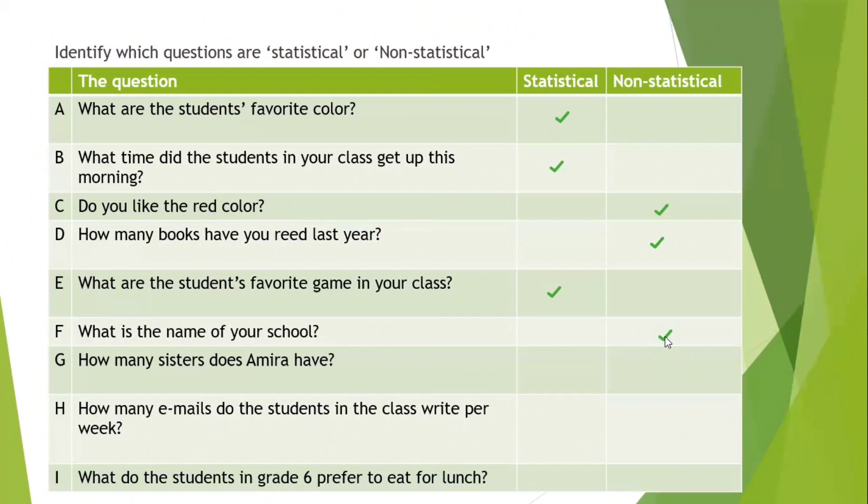G, how many sisters does Amira have? So I'll go and ask Amira, how many sisters do you have? She will say one, two, three. So this is non-statistical. H, how many emails do the students in the class write per week? So I have to ask students, how many emails do you write per week? And each one will say a different number. So this is statistical. I, what do the students in grade six prefer to eat for lunch? Each one prefers a different meal. So this is statistical.